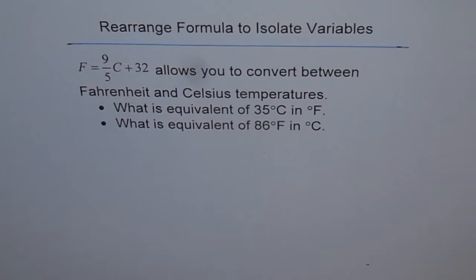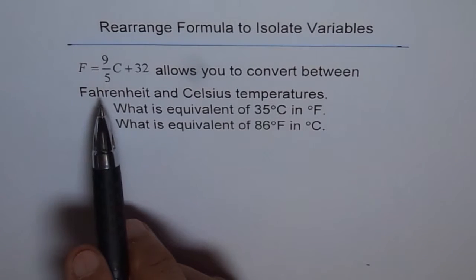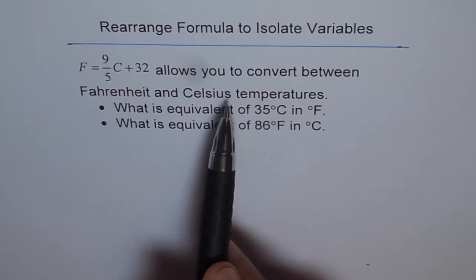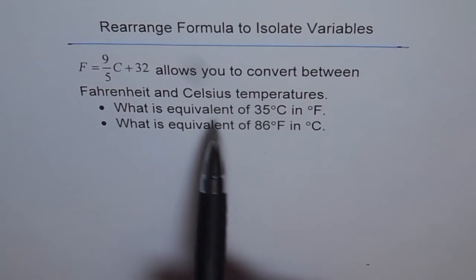Rearrange formula to isolate variables. F equals 9 over 5 C plus 32 allows you to convert between Fahrenheit and Celsius temperatures.